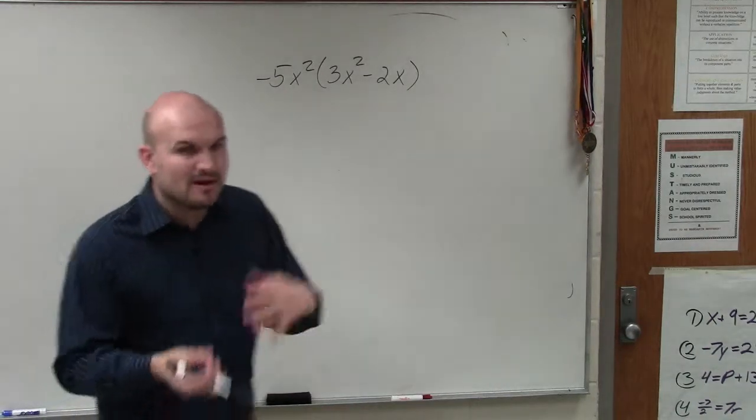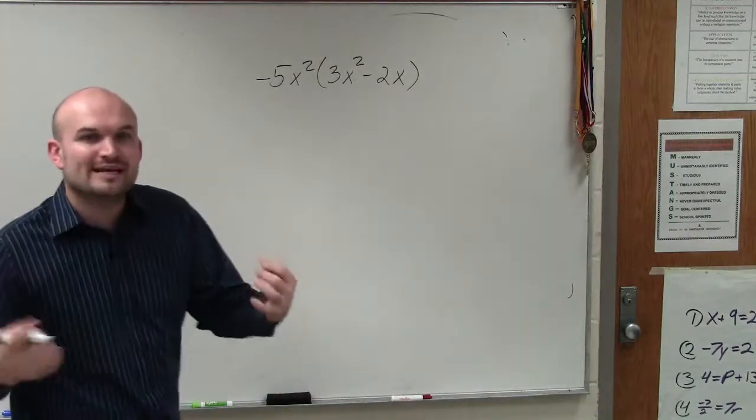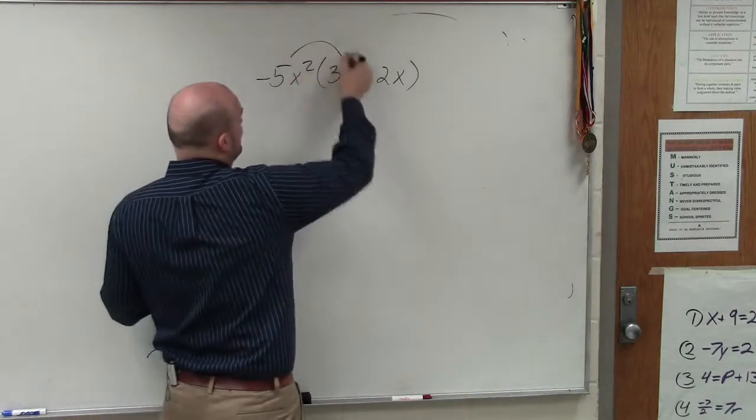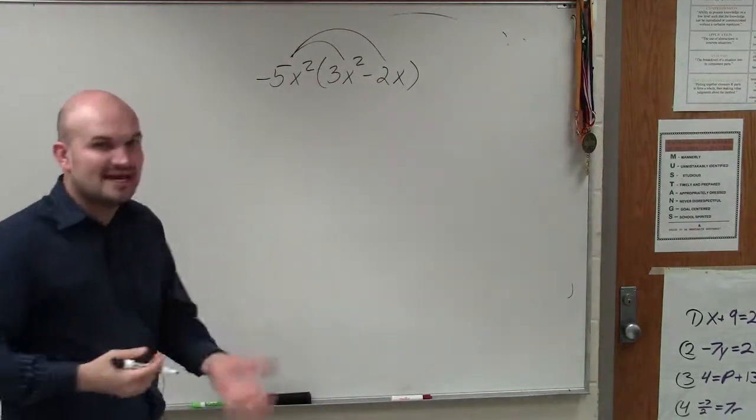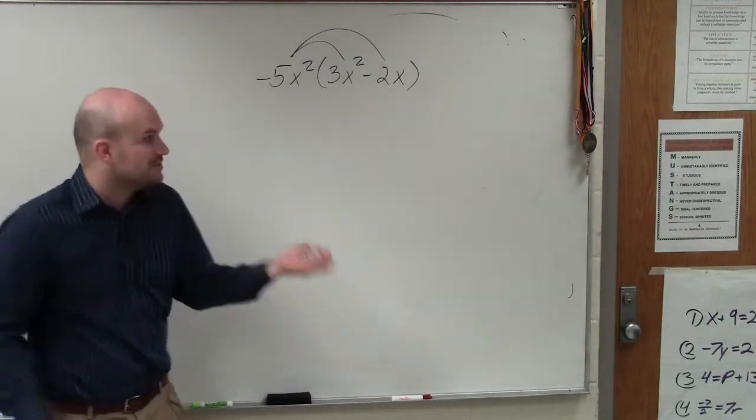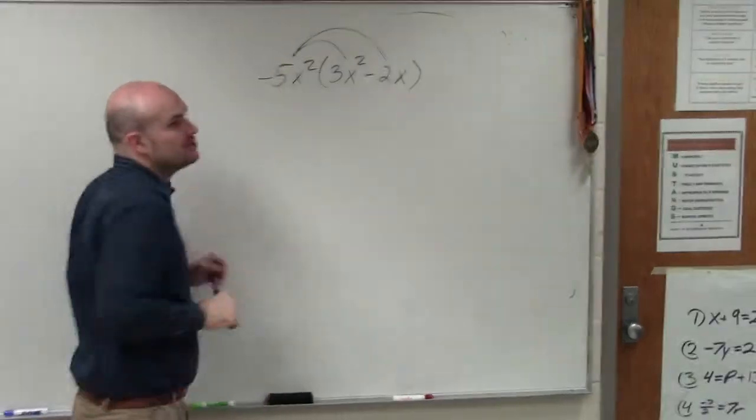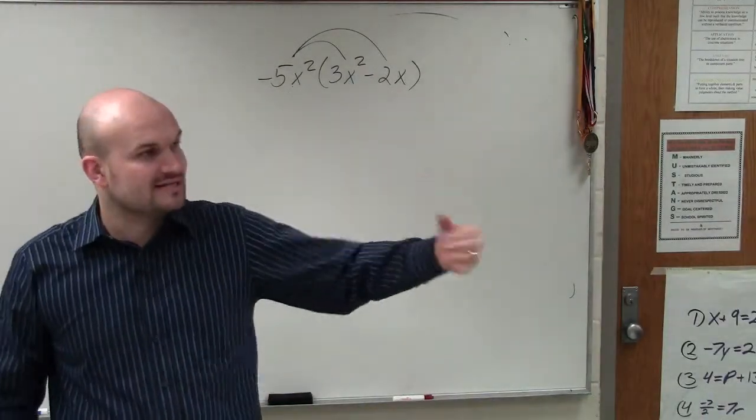Ladies and gentlemen, when you're multiplying polynomials—monomials times polynomials, polynomials times polynomials—we need to apply the distributive property. And what the distributive property basically states is when you have a term multiplied by a polynomial or an expression, you have to multiply that term by every single term inside of the parentheses or inside that expression.